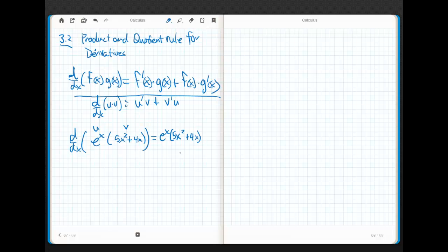That's this guy times this guy plus the derivative of the second term, which is 10x plus 4. The derivative of the sum is the sum of the derivatives, so I'm starting to incorporate all of these rules at once. The derivative of 5x^2 is 10x, the derivative of 4x is 4, and then I multiply that times the first as it stands.